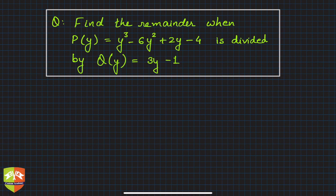Hello and welcome to another problem solving session on factorization of polynomials. The question is: find the remainder when P(y) = y³ - 6y² + 2y - 4 is divided by Q(y) = 3y - 1.